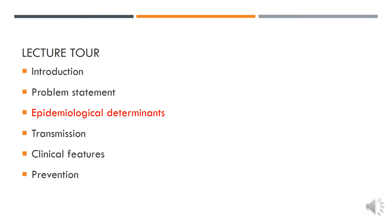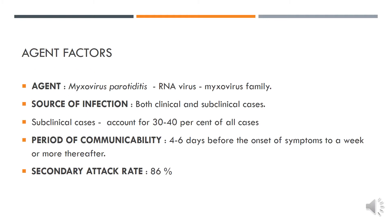Going on to the epidemiological determinants of mumps: the agent causing mumps is the Myxovirus parotiditis virus, which is an RNA virus belonging to the myxovirus family. There is only one serotype of this virus.